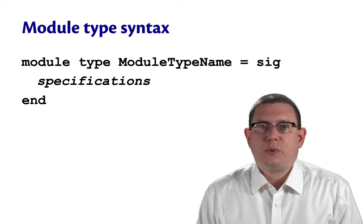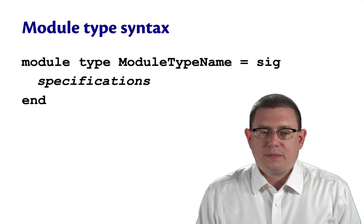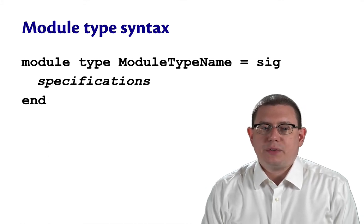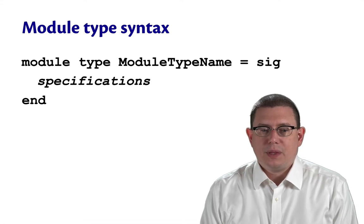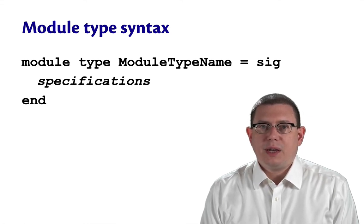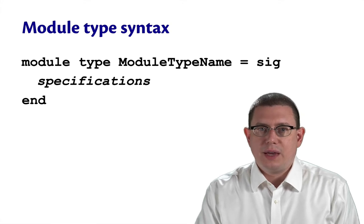Now that we have some understanding of module types, let's take a closer look at their syntax and semantics. A module type is written with the keywords module type, followed by the name, then equals the keyword sig, some specifications, and the keyword end.